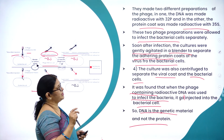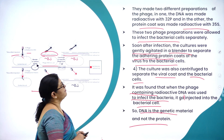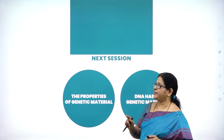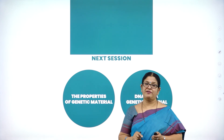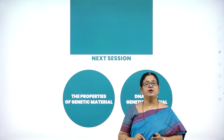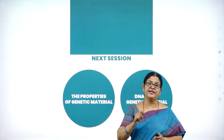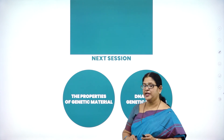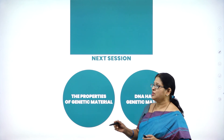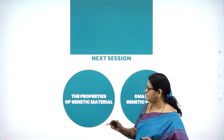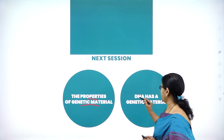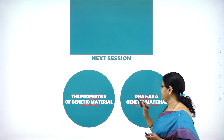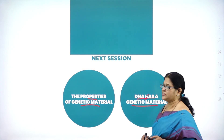Using radioactive elements 32-phosphorus and 35-sulphur, with the experiments of Frederick Griffith, then Avery-MacLeod-McCarty, and Hershey and Chase, it was proved that DNA is the genetic material. I will be back in the coming session with more concepts of this chapter — the properties of genetic material and DNA as a genetic material.